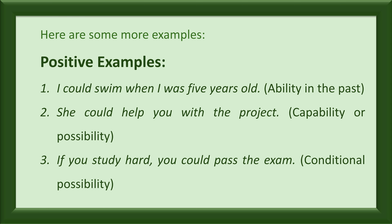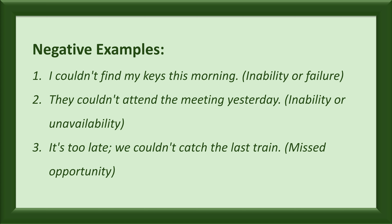Here are some more examples. Positive examples: I could swim when I was five years old — ability in the past. She could help you with the project — capability or possibility. If you study hard, you could pass the exam — conditional possibility. Negative examples: I couldn't find my keys this morning — inability or failure. They couldn't attend the meeting yesterday — inability or unavailability. It's too late, we couldn't catch the last train — missed opportunity.